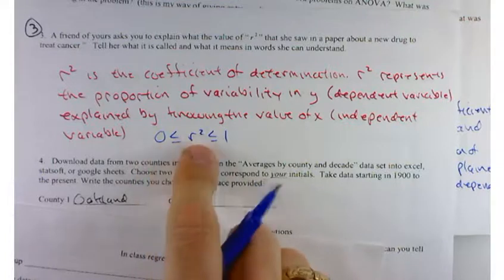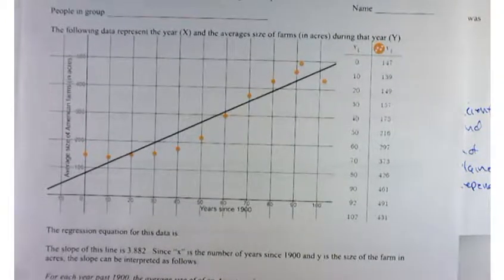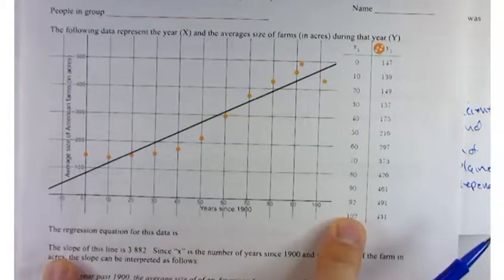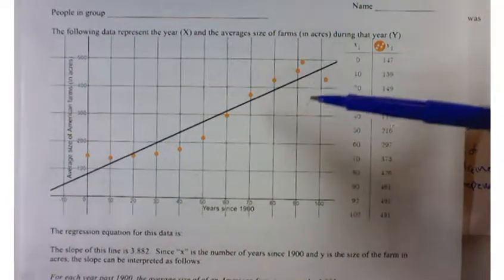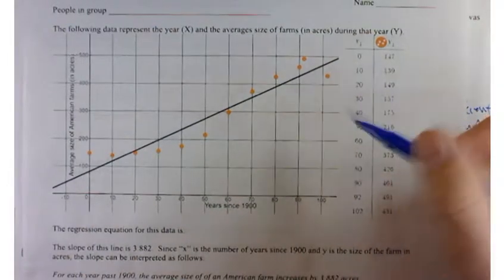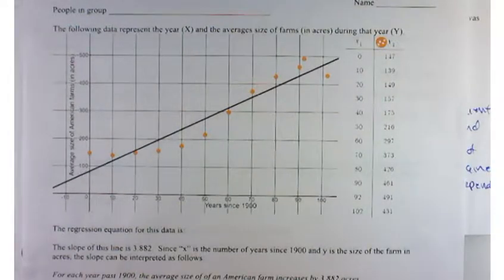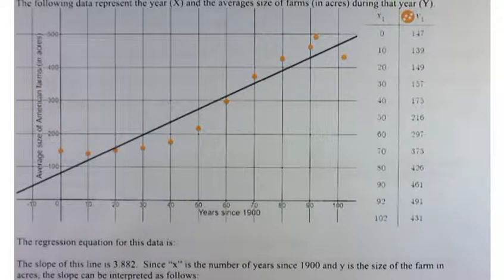And then, of course, you have everything in between. But it's telling you how good a job your data is, your x value is, in telling you what the y value is. In the case on the front of your in-class regression quiz, take a look at this line. Do the data lie pretty close around this line?